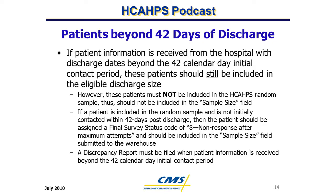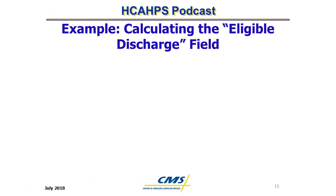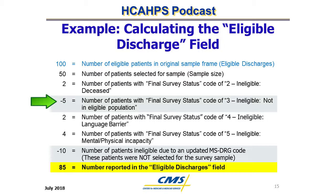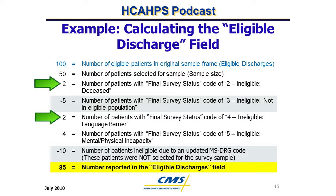A discrepancy report must be filed whenever patient information is received beyond the 42-day initial contact period or when patients are not contacted within 42 days post-discharge. Example: Calculating the Eligible Discharge Field. The initial eligible discharge size is 100 and the sample size is 50. However, the final eligible discharge size post-sampling is 85, due to 5 patients assigned a final survey status code of 3 (ineligible, not-ineligible population) and 10 patients with updated ineligible MS-DRG codes. Note that patients with survey status codes of 2, 4, and 5 were not subtracted from the eligible discharge count.